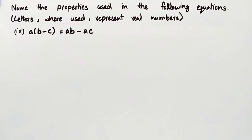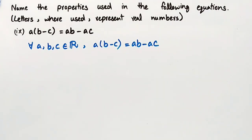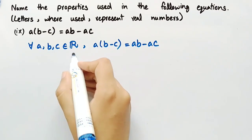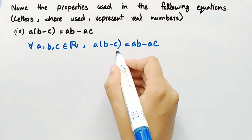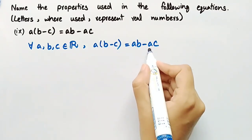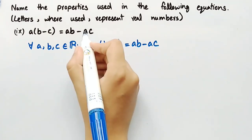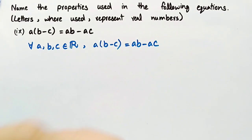Equation number 9 is A multiplied by (B minus C) is equal to AB minus AC. By the definition of the left distributive property, for all A, B, C belonging to the set of real numbers, A multiplied by (B minus C) is equal to AB minus AC. The property used in this equation is the left distributive property.